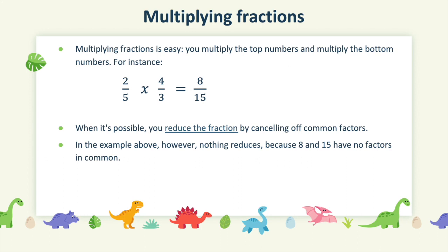Multiplying fractions is easy. You multiply the top numbers, or the numerators, and you multiply the denominators. For example, 2 out of 5 times 4 out of 3. All you need to do is multiply the numerators: 2 times 4, which is 8. Then multiply the denominators: 5 times 3, and the denominator of your answer will be 15. When it's possible, ensure you reduce the fraction by canceling off the common factors. In the example above, however, nothing reduces because 8 and 15 have no factors in common.